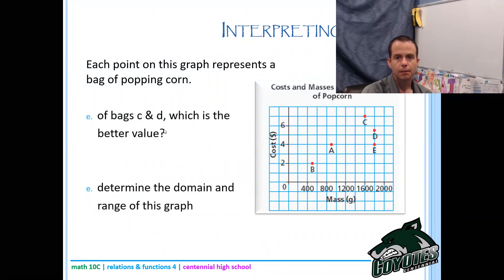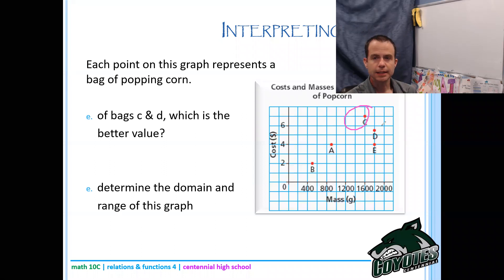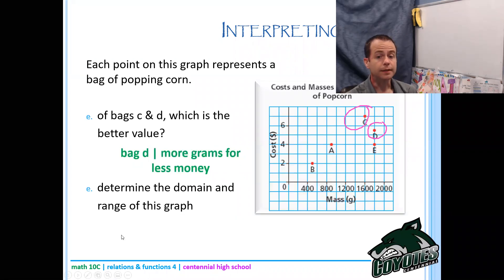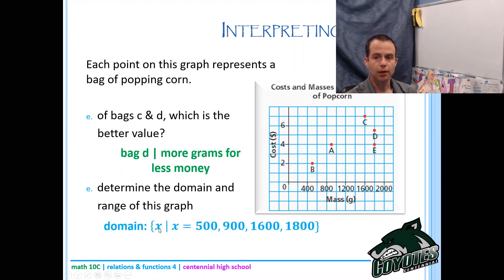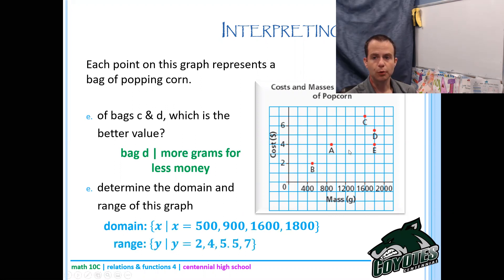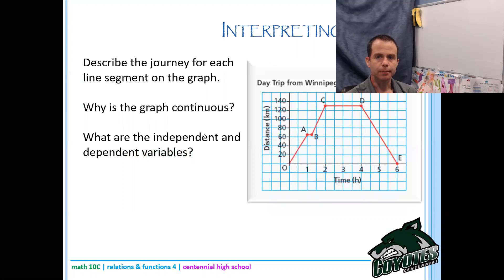Between bags C and D, D is the better value - you're getting more grams for less money. For the domain and range of this discrete data, list the values: domain is X equals 500, 900, 1600, and 1800. The range is Y equals 2, 4, 5.5, and 7.